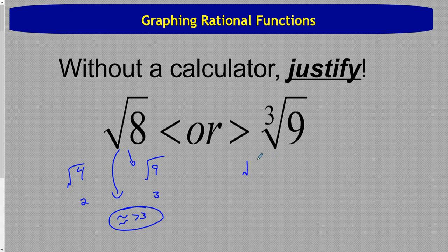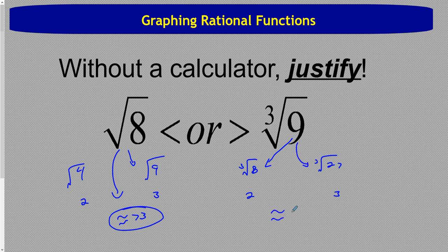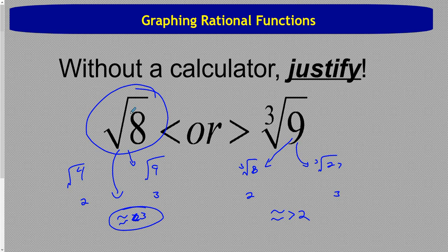Now the cube root of 9. That's between the perfect cubes 8 and 27. The cube root of 8 is 2, and the cube root of 27 is 3. So the cube root of 9 is also between 2 and 3. However, 9 is a lot closer to 8 than it is to 27, so this one is going to be approximately, but larger than, 2. We can check: the square root of 8 is approximately 2.83, and the cube root of 9, which is 9 to the 1/3, is approximately 2.08.